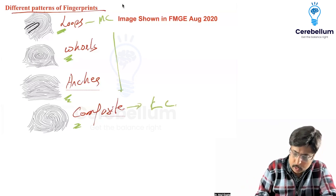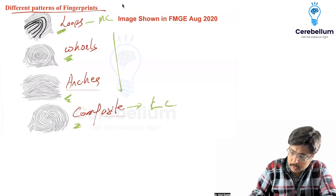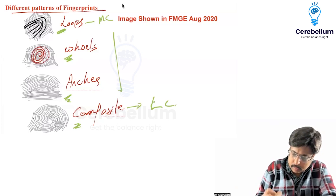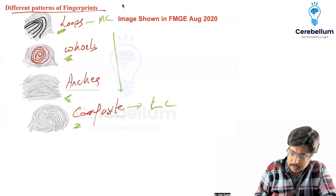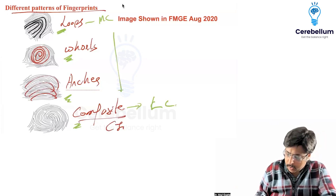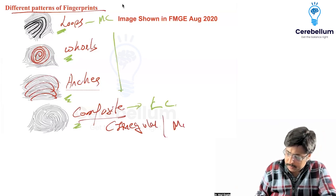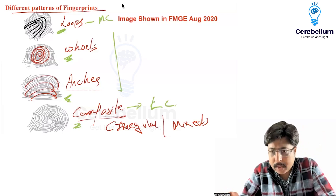This is Loops. This is Whorls. This is Arches. Composite is irregular or mixed. Remember: Loops is the most common fingerprint pattern.